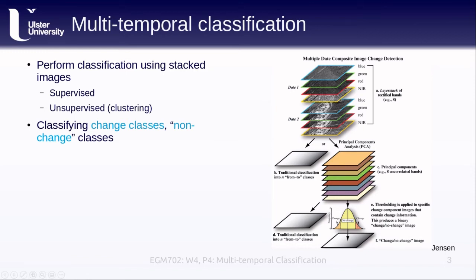What we're classifying here is not just assigning classes to pixels — we're also differentiating between pixels that have changed classes from time 1 to time 2 and pixels that have stayed the same. So we're classifying both change classes and non-change classes. One thing to think about is how similar the change pixels are to the non-change pixels, as this will be important in the final classification.